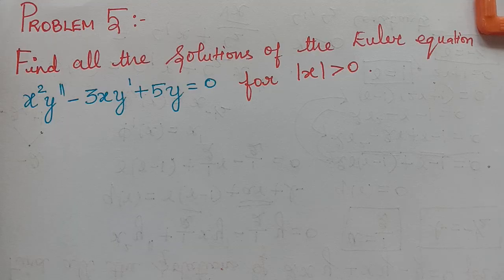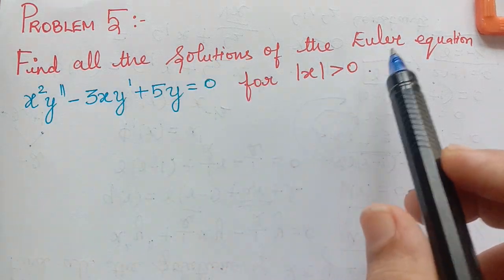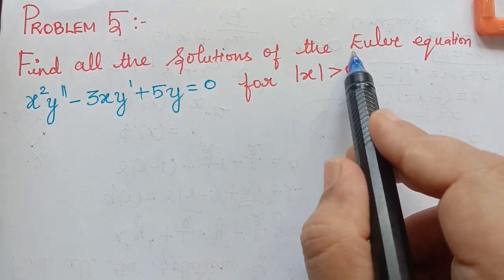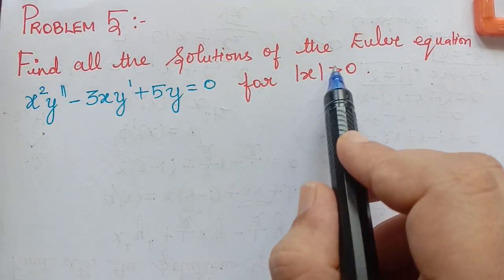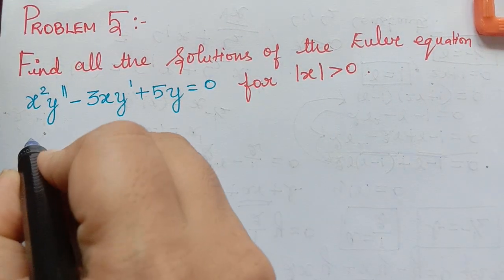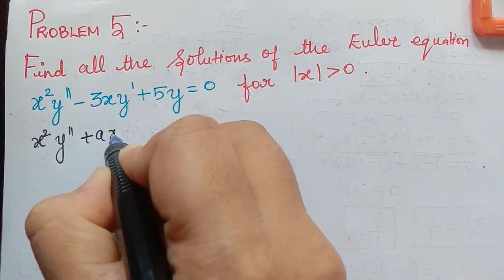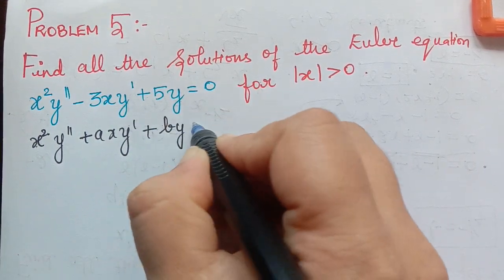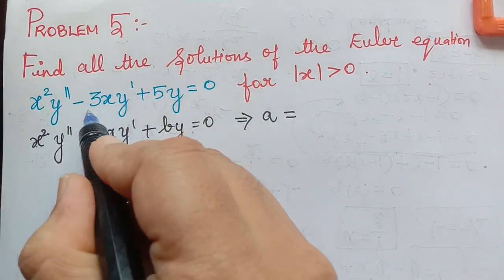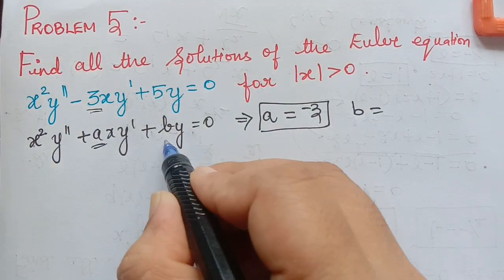The next problem: find all the solutions of the Euler equation for |x| > 0. Note that this applies for all values of x for which |x| > 0. Comparing with x² y'' + a·x y' + b·y = 0, we obtain a = −3 and b = 5.